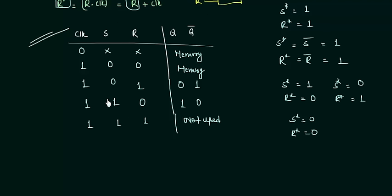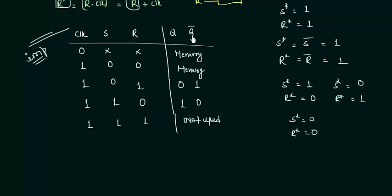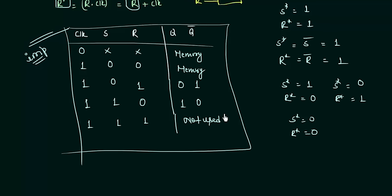This is the truth table for your SR flip-flop, and remember it is very important because whatever you are going to study from now will be dependent on this truth table. Understand this truth table before going to the next presentation, because in the next presentation we are going to use it to find out the characteristic table and then the excitation table. Remember the output values of Q and Q complement depending upon the values of clock, S, and R. This is all for this presentation — see you in the next one.